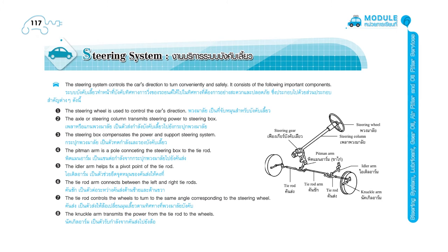Key steering system components include: steering wheel, steering column, steering gear, pitman arm, tie rod, tie rod arm, idler arm, and knuckle arm.